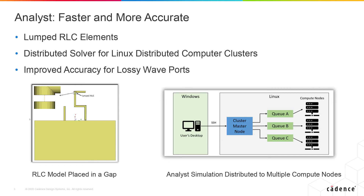A big improvement — again faster, better, more capacity — is that Analyst, which has always run on Linux, can now actually split a job up. One frequency, one layout can be split into multiple solvers on multiple computers to solve the matrix in parallel. That is a huge improvement. We can now do problems of up to a hundred million unknowns and more, so absolutely huge problems can be solved in the Linux environment.